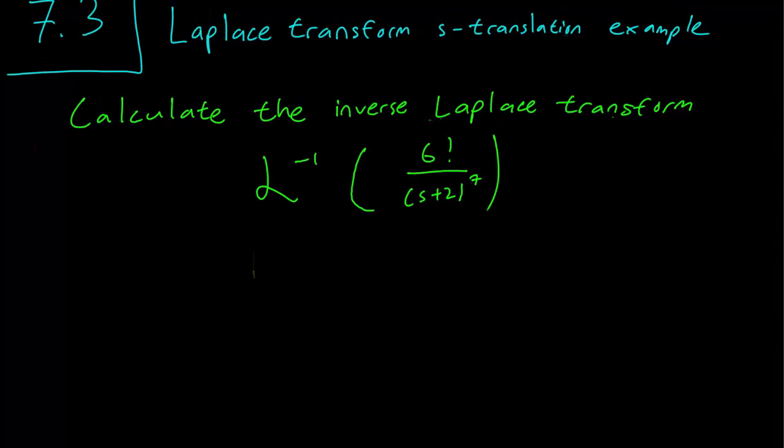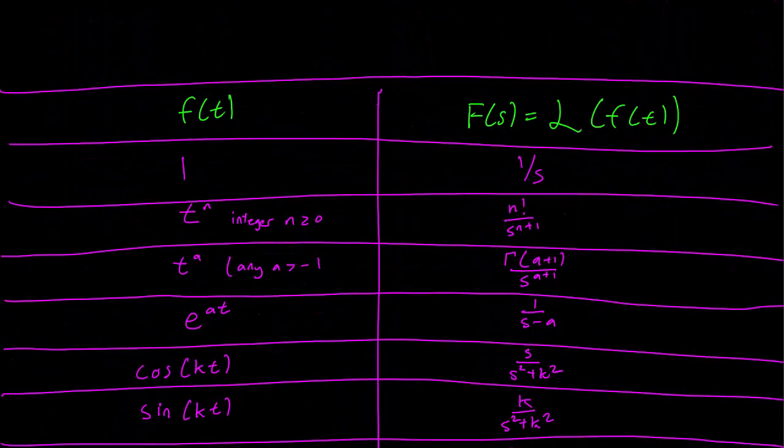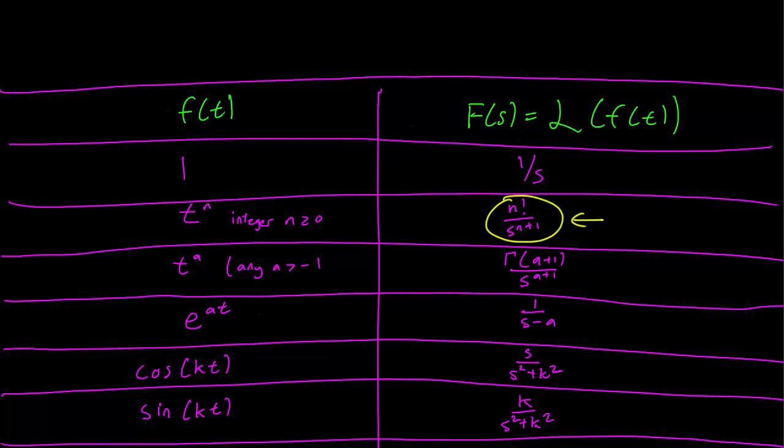So we have 6 factorial over s plus 2 raised to the 7th power and looking at the table, we don't have anything that looks exactly like that but this one comes awful close and that corresponds to t to the n and of course in our case n equals 6.